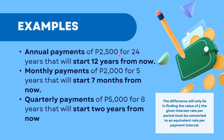First example: annual payments of 2,500 for 24 years that will start 12 years from now. So you pay 2,500 every year for 24 years, but we won't start until 12 years from now. The period of deferral here is from the first year up to the 11th year, because on the 12th year, that's when payments of 2,500 begin until the 24th year.